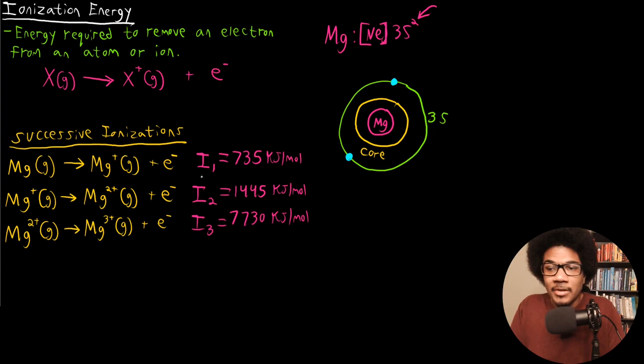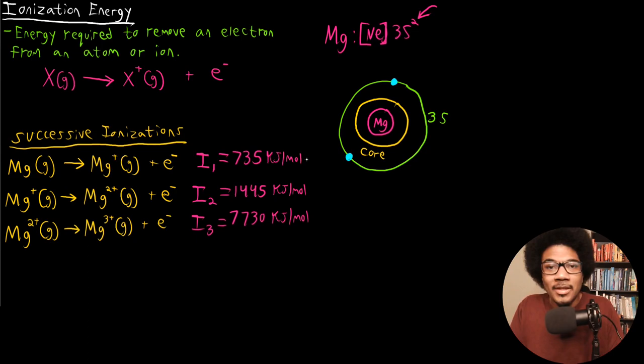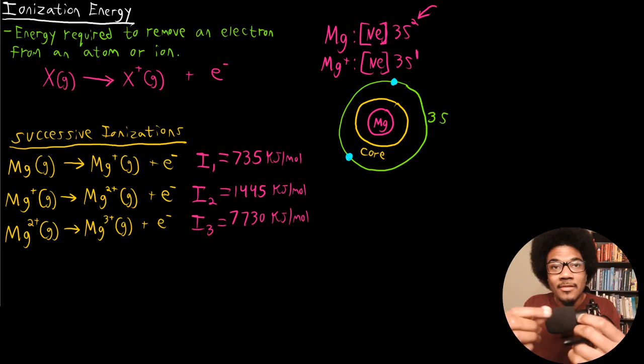The second thing to look at: the second ionization of the magnesium cation is almost double the ionization energy of the first. Why do we see that jump? If we look at the electron configuration for magnesium+, it's [Ne] 3S¹. This ionization energy is higher because it's coming from the 3S orbital, but now there's a charge imbalance — there's a net positive charge, which strengthens the Coulombic attraction between the electron and the nucleus.